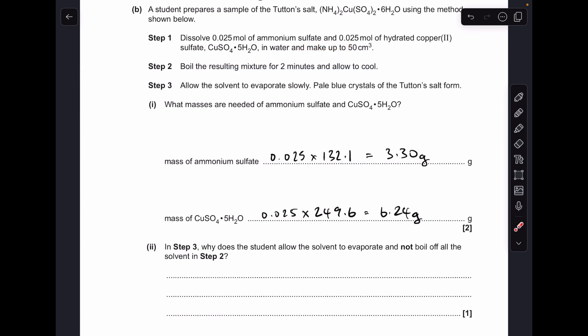Moving on to part B, nice and straightforward. We've just got to do two lots of moles times MR. So we get 3.30 grams for the ammonium sulphate and 6.24 grams for the hydrated. So I hope people didn't forget to include the five waters, hydrated copper two sulphate.